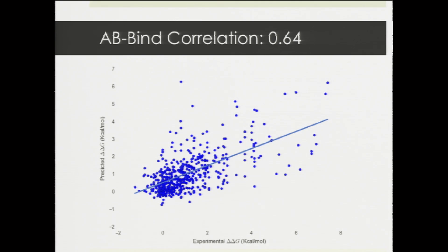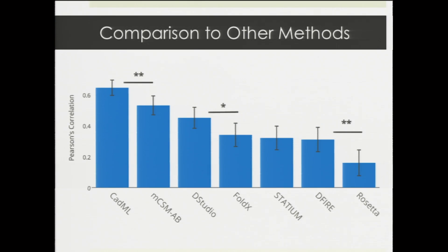How well does it work? I evaluated my method on the AB-Bind dataset, measuring how well my predictions for the effect of each mutation on binding affinity correlate with actual experimental binding affinity changes. I achieved a correlation of 0.64, which is pretty high, showing that my method identifies favorable mutations that improve antibody binding and harmful ones that worsen it with high accuracy. Comparing against state-of-the-art methods also evaluated on AB-Bind — including the machine learning method MCSM-AB with a correlation of 0.53, and several simulation-based methods which were even lower — CatML significantly outperformed all of them.